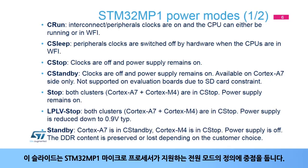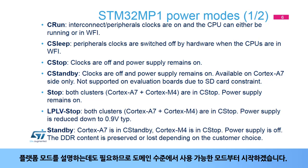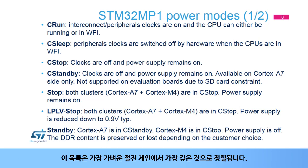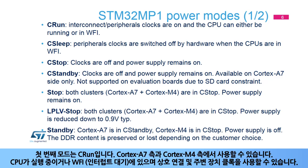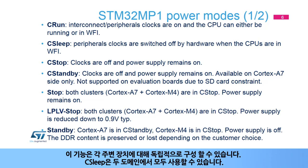This slide focuses on the definition of the power modes supported by the STM32MP1 microprocessor. There are power modes at domain level, prefixed with C, and at platform level with no prefix. The list is ordered from the lightest power-saving to the deepest. The first mode is C-Run, available on both the Cortex-A7 and Cortex-M4 sides — the CPU is running or in WFI, and interconnect and peripheral clocks are available. C-Sleep mode is an add-on to C-Run, offering the possibility to automatically gate peripheral clocks when the CPU is in WFI; this can be configured independently for each peripheral. C-Sleep is also available on both domains.